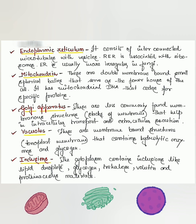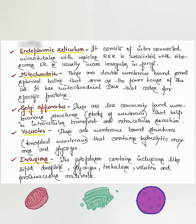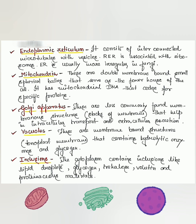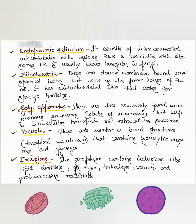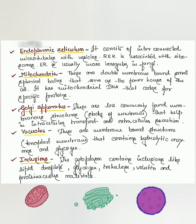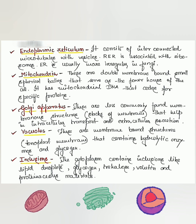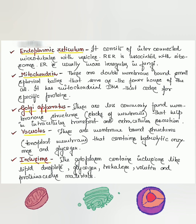The Golgi apparatus consists of less commonly found membranous structures — stacks of membranes — that help in intracellular transport and extracellular secretion. Vacuoles are membrane-bound structures; the membranes are like unit membranes and are known as tonoplast. The tonoplast contains hydrolytic enzymes and glycogen.